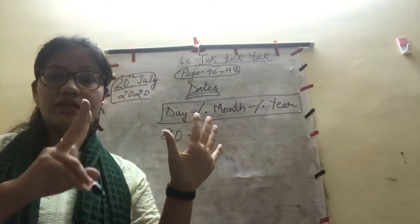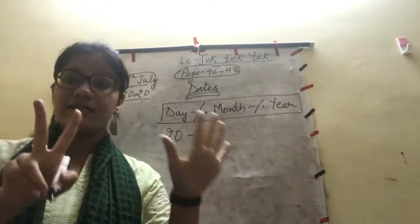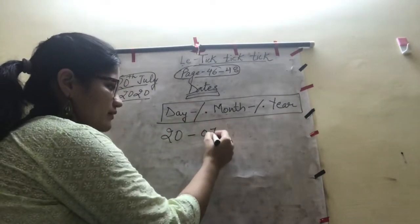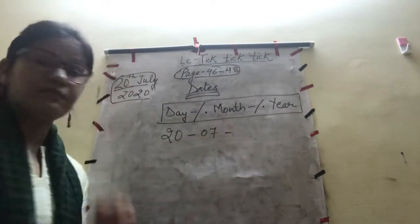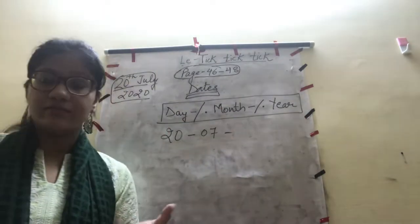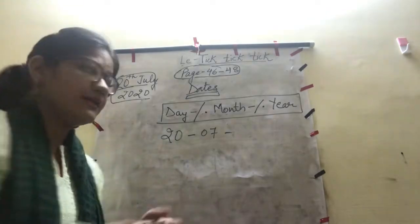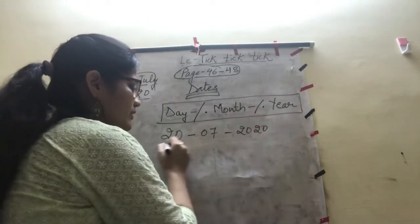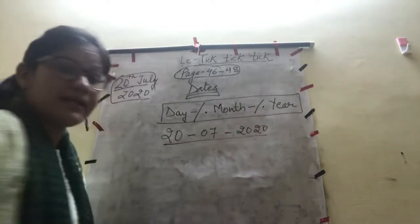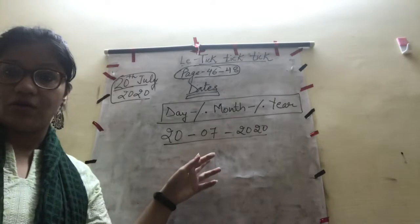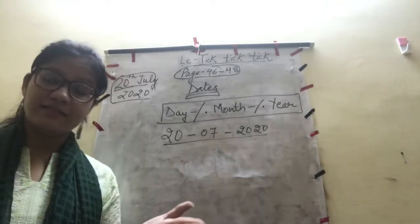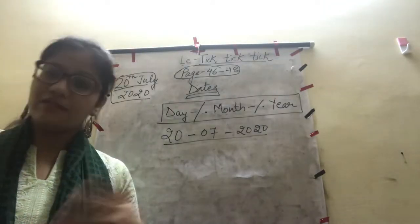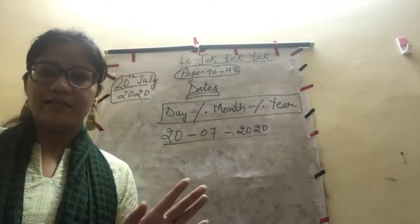May, June, and July — so July is the 7th month, written as 07. And the year is 2020. So if you write 20/07/2020, your date is complete; otherwise it is incomplete. This is how you write a date in numbers.